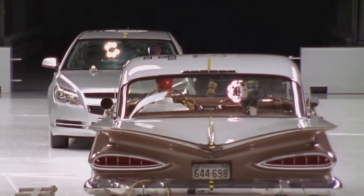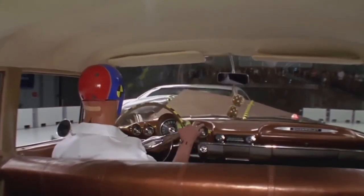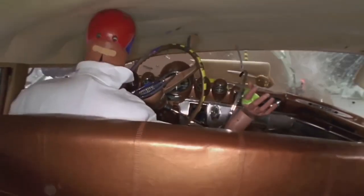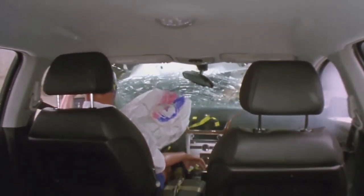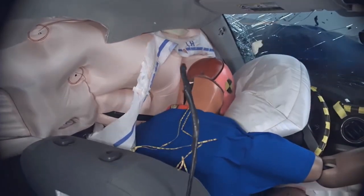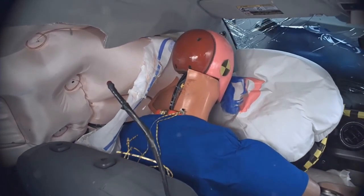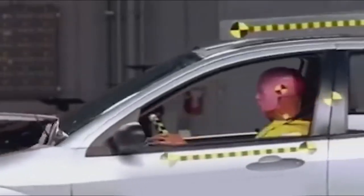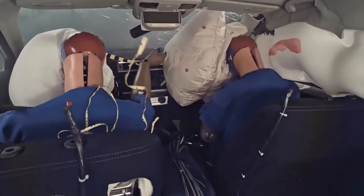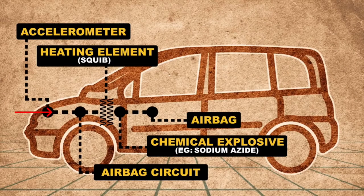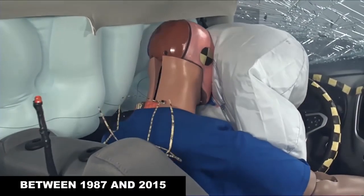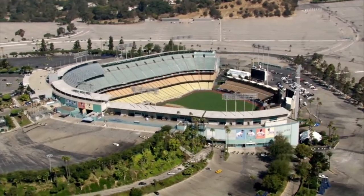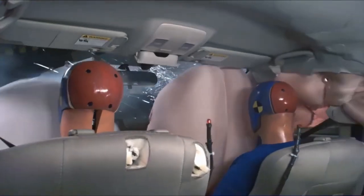Quick first law refresher: an object in motion stays in motion. So when your car hits something, it stops, but your body keeps moving forward. If it keeps moving forward into the steering wheel or dashboard, that's bad news. The airbag is there to slow you down more gradually. The front face of the airbag moves toward you at between 150 and 250 miles per hour. An airbag has to have already blown up when you hit it. The accelerometer detects the crash, the squib ignites the sodium azide, nitrogen gas is produced, and in 50 milliseconds it's already deployed. Between 1987 and 2015, frontal airbags saved 44,869 lives — all thanks to one chemical reaction and some ingenious physics.